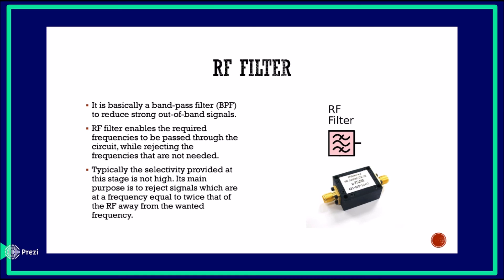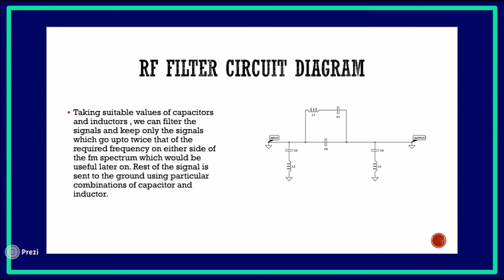Here is the RF filter circuit diagram. By taking suitable values of capacitors and inductors, we can filter the signals and keep only the signals which go up to twice that of the required frequency on either side of the FM spectrum. The rest of the signal is sent to the ground using particular combinations of capacitor and inductor.